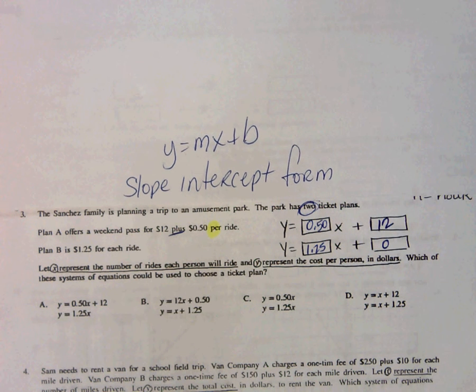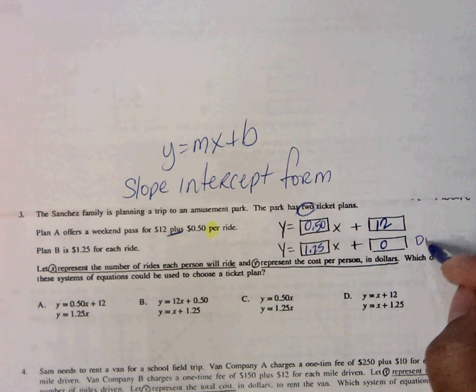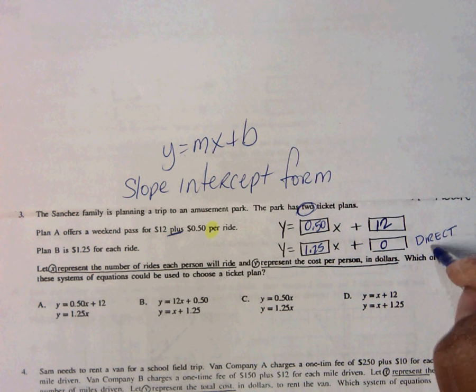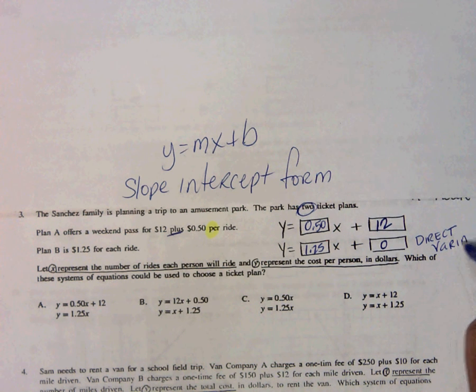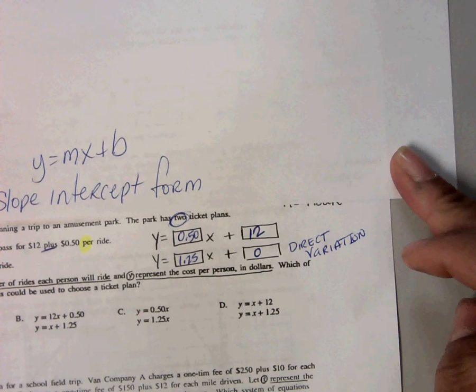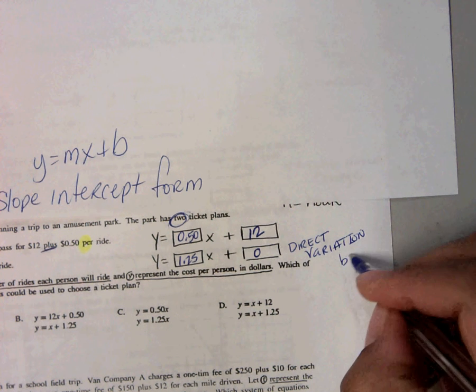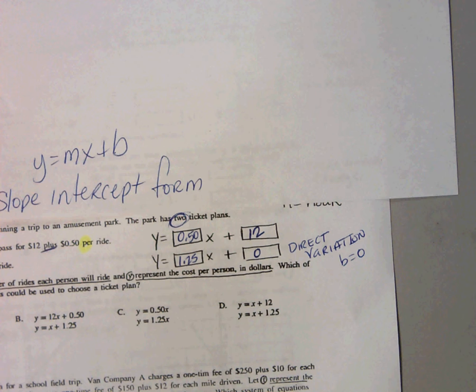And for those that have been paying attention and listening and really working hard, you should remember that's direct variation. And direct variation says that b will always be zero. That's old information, just helping you to remember.